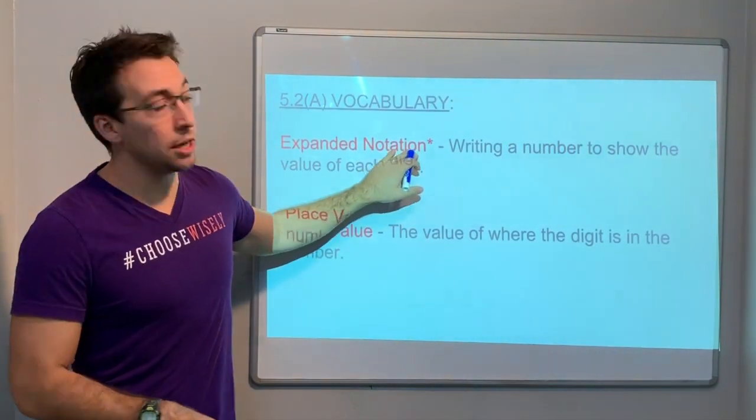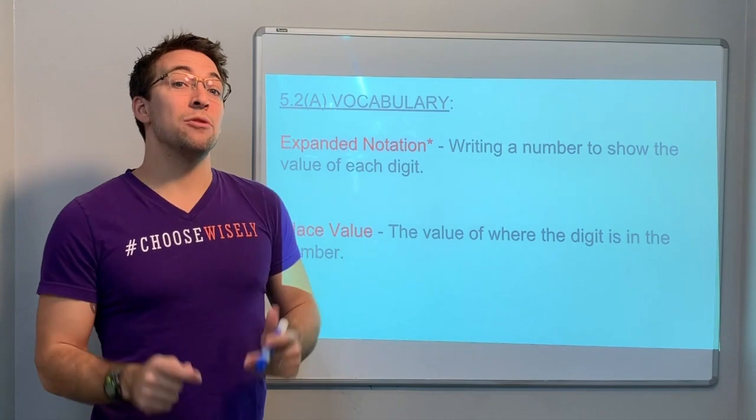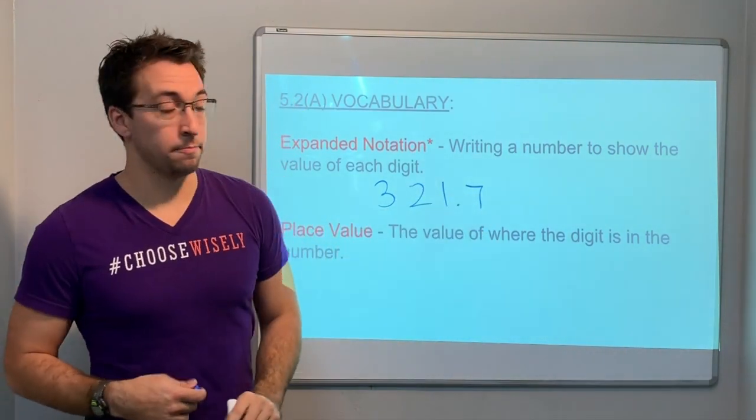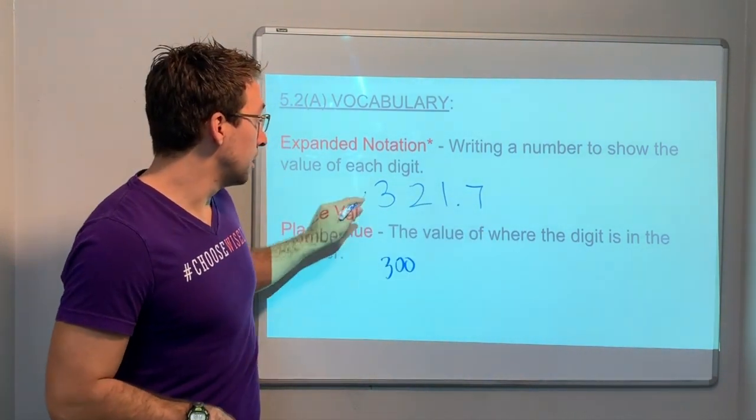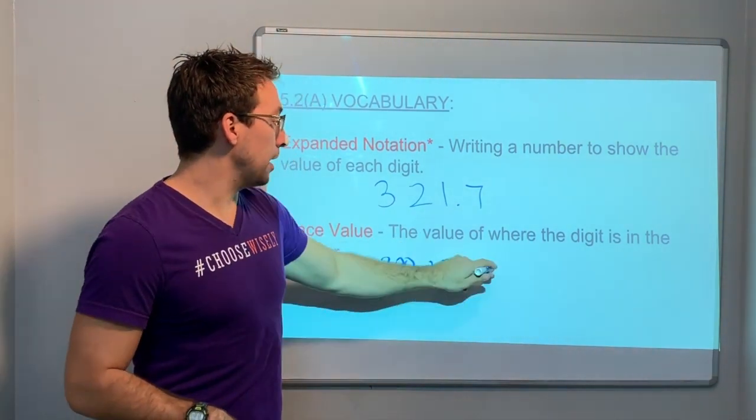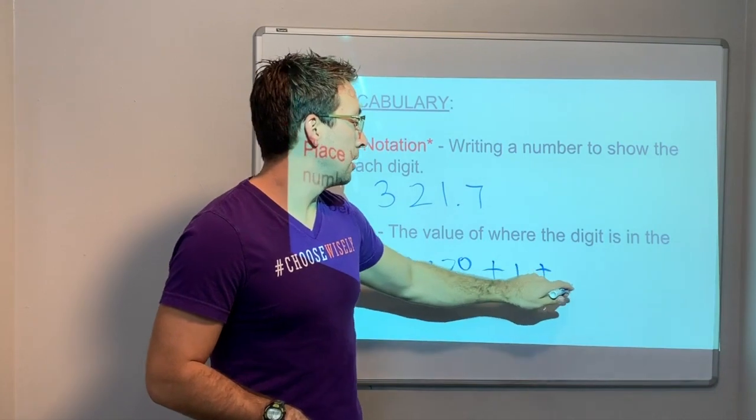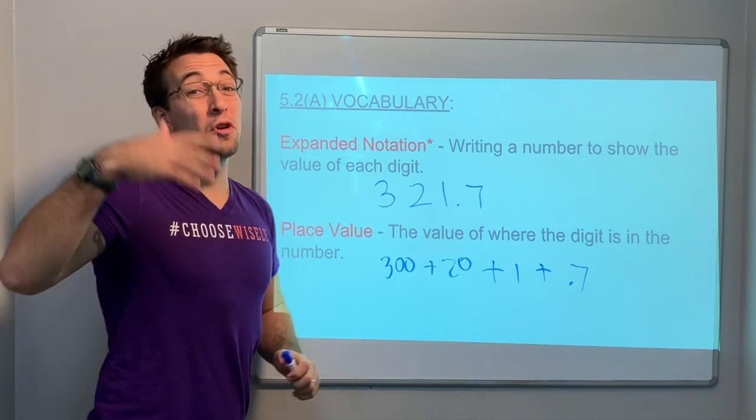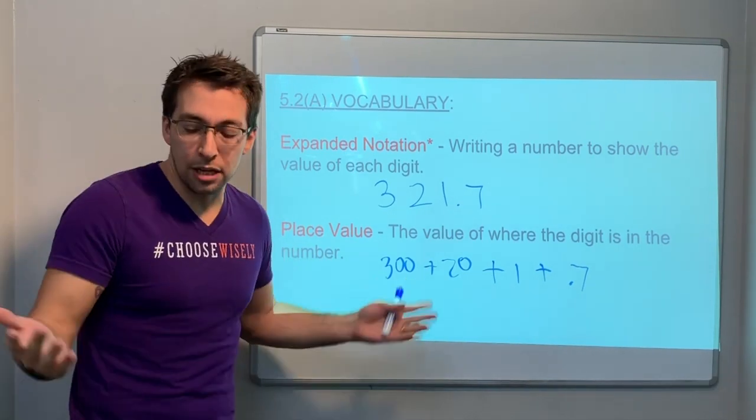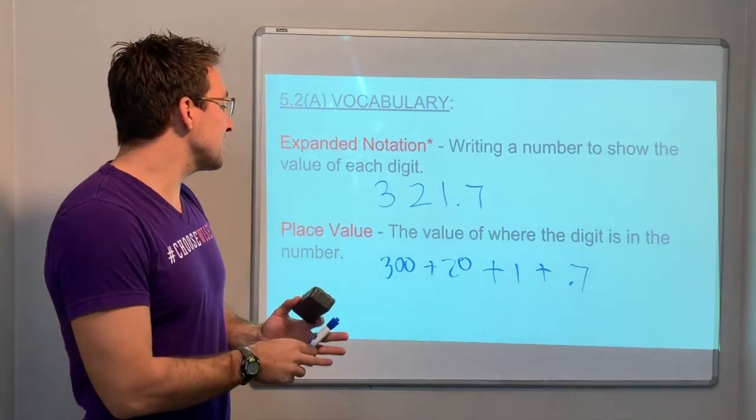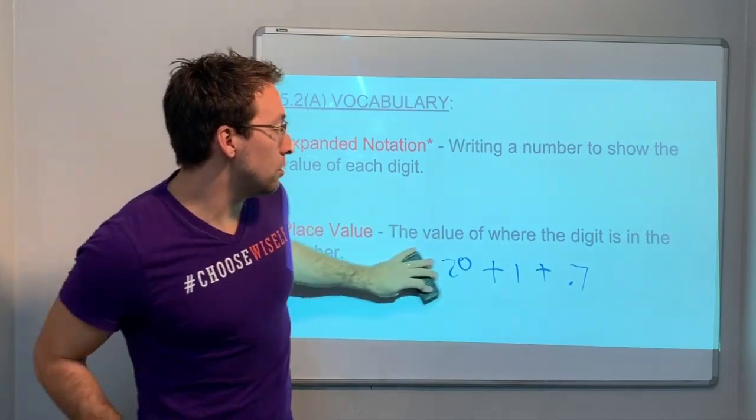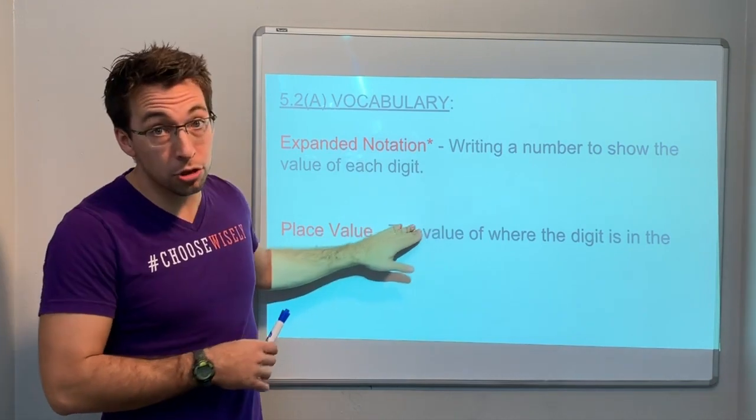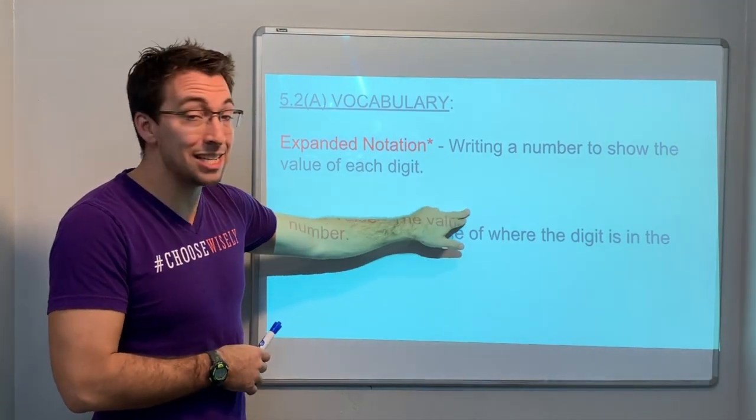Expanded notation is writing a number to show the value of each digit. So if I have the number three hundred twenty-one and seven tenths, I could say 300 plus 20 plus 1 plus 0.7. That's expanded form. If I wanted to say word form or expanded notation, then you write it out in words. Place value is the value of where the digit is in the number. So that 3 was in the hundreds place because there's three hundreds. The 2 in 321 was in the tens place.